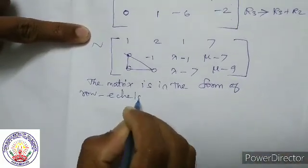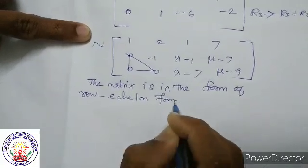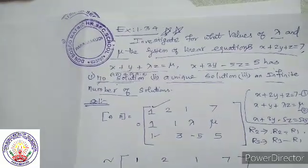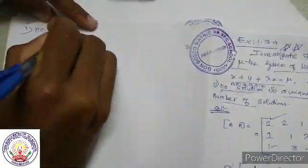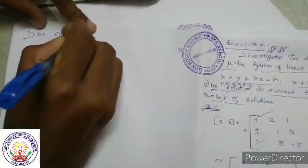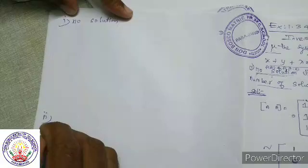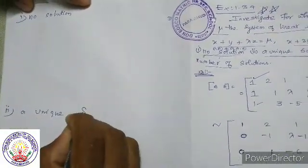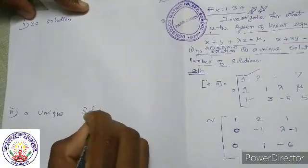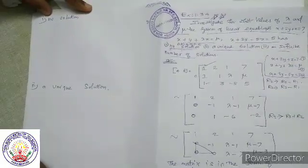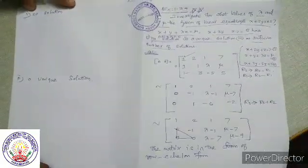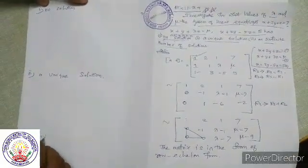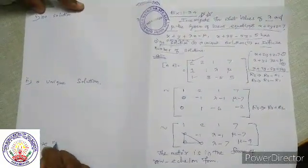We are applying this rule to determine the three cases: number 1, no solution; number 2, unique solution; number 3, infinite number of solutions.